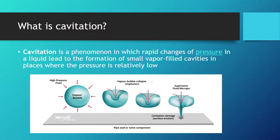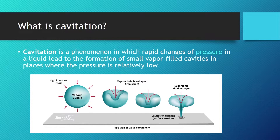What is cavitation? Cavitation is a phenomenon in which rapid changes of pressure in a liquid lead to the formation of small vapor-filled cavities in places where the pressure is relatively low. On the pump's inlet side in hydraulic pumps we have excessive vacuum conditions on the supply side, and that's where cavitation or vapor bubbles are formed. They collapse when they reach a point of higher pressure.